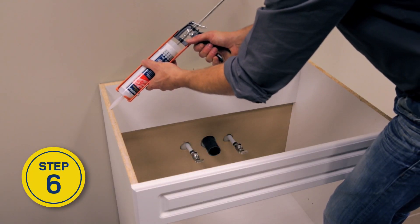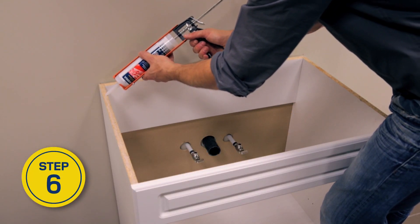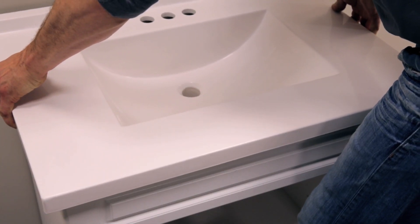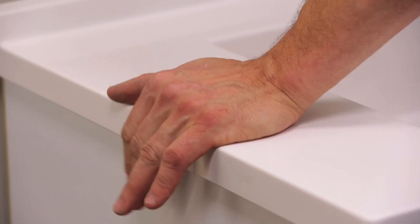Attach the countertop to the cabinet by applying a bead of caulking around the top of the cabinet. Lay the countertop on the cabinet while sliding it against the wall and pressing firmly to solidify the joint.